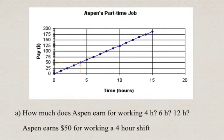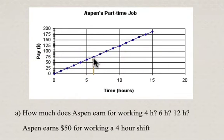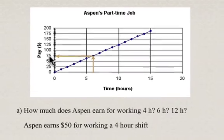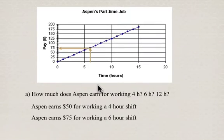Next example, we have to figure out how much she earns for six hours. Six is approximately here. Read up until we hit the graph, and then go across, and we find that she earns $75 for working a six-hour shift.